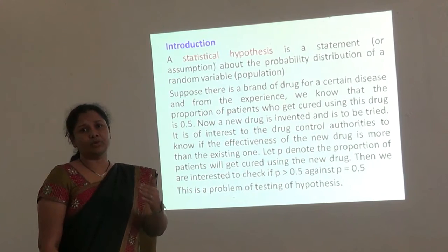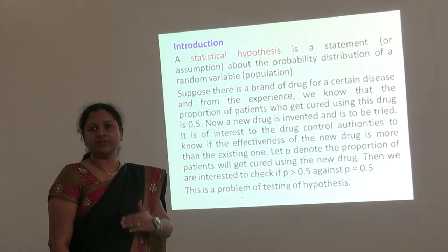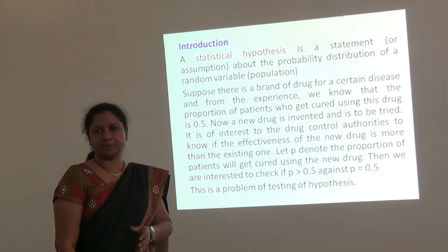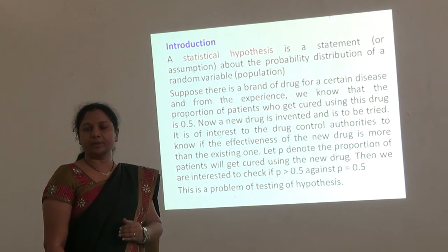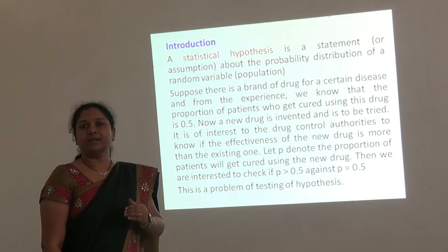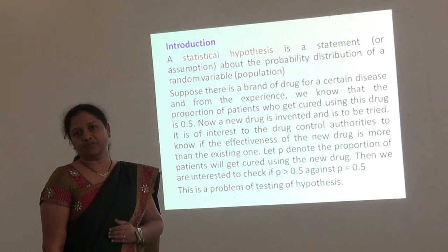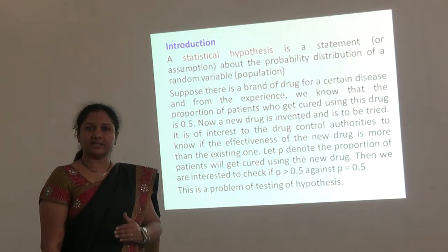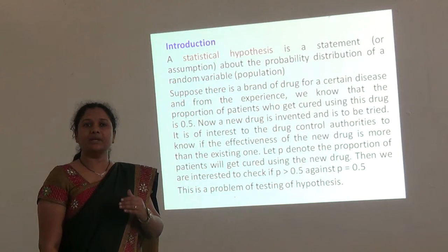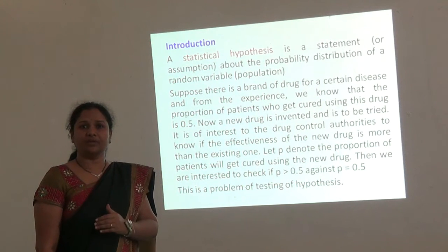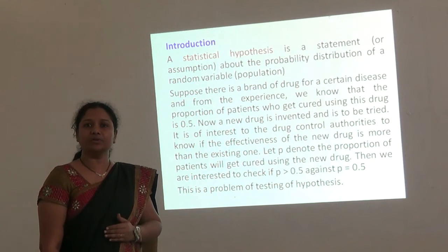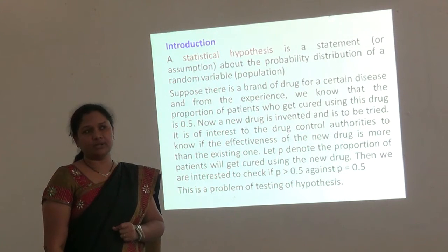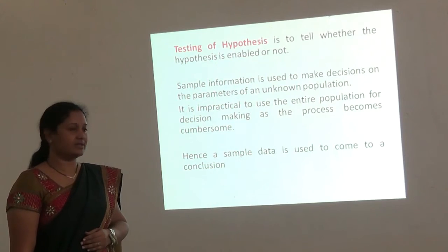So, when do we say it is more effective? The previous drug, we said the probability of curing is 50%. So the new drug will be more effective than the earlier one if the probability is greater than 0.5. So here we have to test whether P is greater than 0.5 against P is equal to 0.5. So this is called a problem of testing of statistical hypothesis.